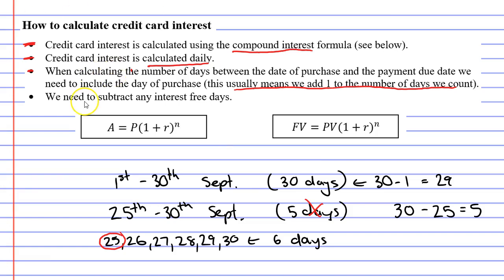And the next one: we need to subtract any interest-free days. So if you're getting 44 interest-free days and the period was 46 days, then you're only going to pay 2 days worth of interest.